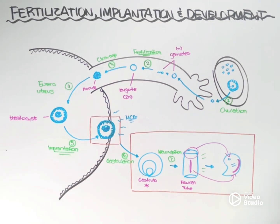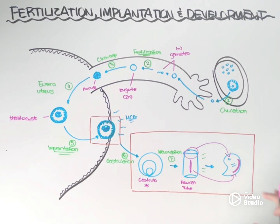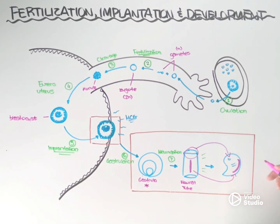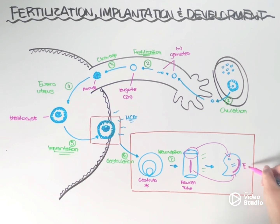Eventually that neural tube will undergo many more changes, and then by about six to eight weeks after fertilization, we're going to start to see a structure that looks a little bit more familiar, and now we can start referring to it as an embryo.